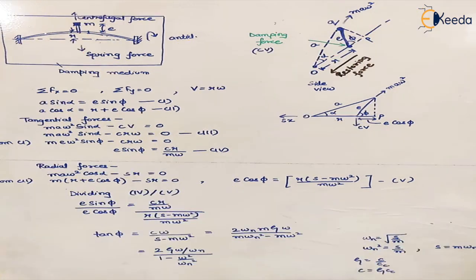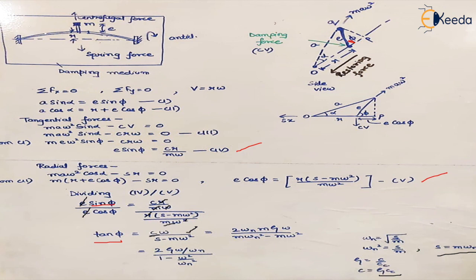To find the phase angle phi, which is the phase lag in the system, we use equations 4 and 5. Dividing these two equations, sin(phi) and cos(phi) combine to give tan(phi). The e terms cancel, r cancels, m cancels, and ω cancels. We replace s with m·ω_n² and c with ζ·c_c, where c_c is the critical damping coefficient. Taking ω_n² as common, the final value of tan(phi) is obtained. Taking the inverse tangent of this equation gives the value of phi, which is the angle the rotor makes with the axis of rotation.